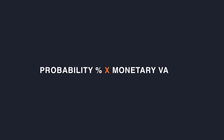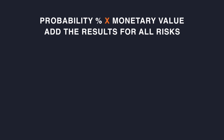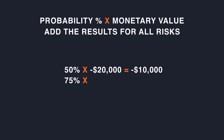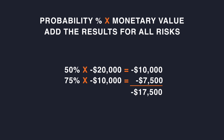What we do next is multiply the percent probability for each risk times the monetary value for the impact and add those together. For our two risk examples, that means we take the 50% probability from the first risk of client payment and multiply that by the monetary impact of negative $20,000 and we get negative $10,000. Then we take our second risk of bad weather with a probability of 75% and multiply that by the monetary impact of negative $10,000 and we get negative $7,500. Then we add these two values to get negative $17,500. Once this is done for all high priority and possibly medium priority risks, the value that is reached can be added to the budget as contingency.